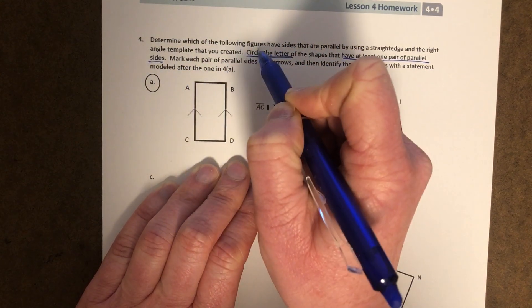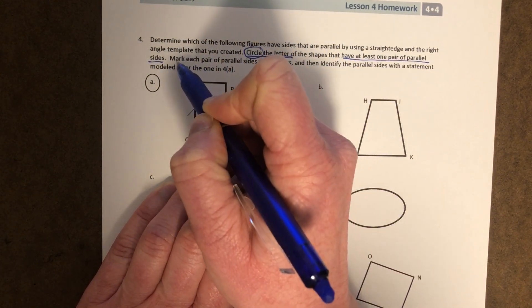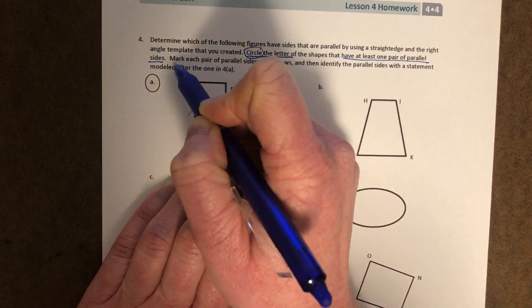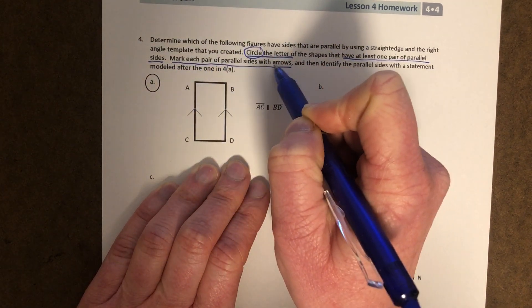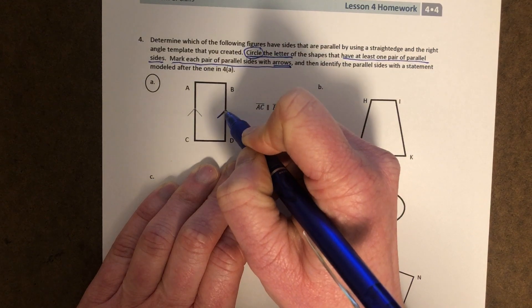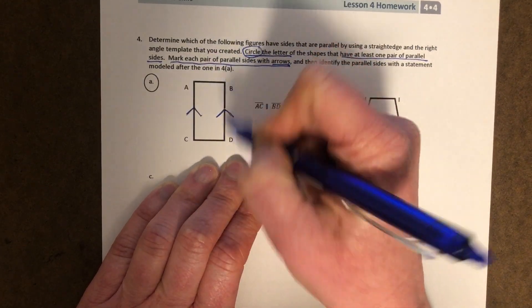And then the next one, they have to circle this one. This one is mark each pair of parallel sides with arrows. So arrows. And then see how they did that? They marked the parallel sides with arrows.